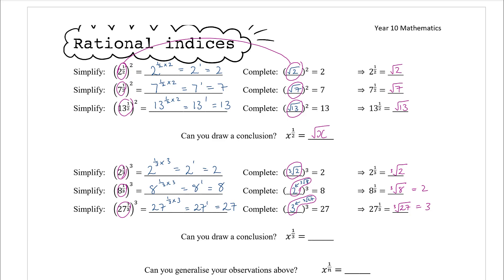So we can draw the conclusion: x to the power of a third is the cube root of x. Be careful when writing cube roots that they don't look like three times root x versus cube root of x — this is actually why fractional powers are sometimes preferable to using root notation. Square root is fine, but cube root and fourth root can easily look ambiguous; there's less ambiguity with x to the power of a third.